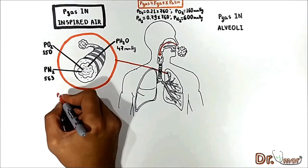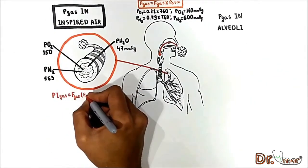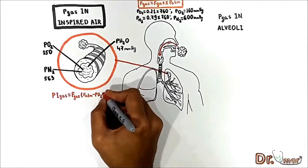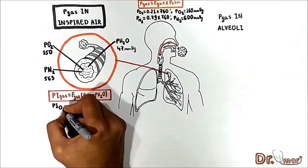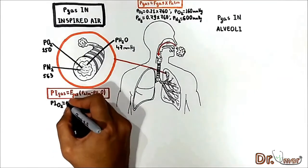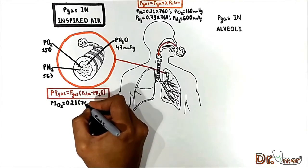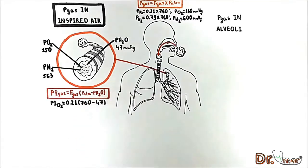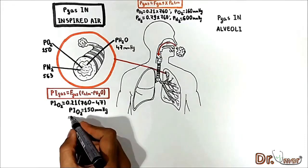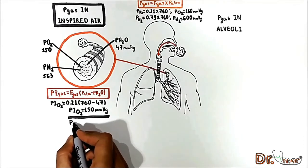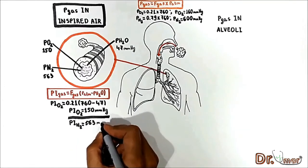P inspired gas equals the fraction of that gas times atmospheric pressure minus the vapor pressure of water. For example, the PO2 of inspired air equals 0.21 times 760 minus 47, which gives us 150 mmHg. If you calculate PN2 in inspired air you will get 563 mmHg.